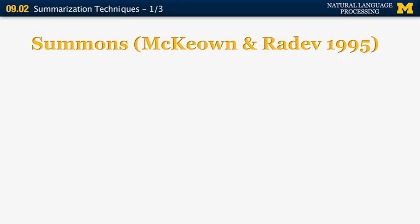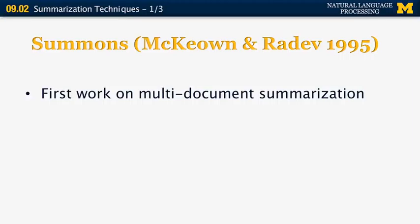Another paper from 1995 was by McKeown and Radev, also in ACL 1995. It's a system called SUMMONS, and this is the first paper that introduced the problem of multi-document summarization. All the work before was on single news articles or single scientific papers. Here, the input is a set of news stories on the same topic that possibly come from a variety of different sources.